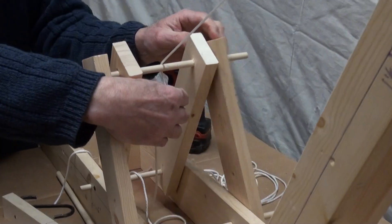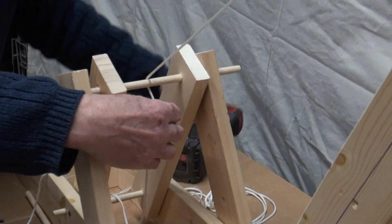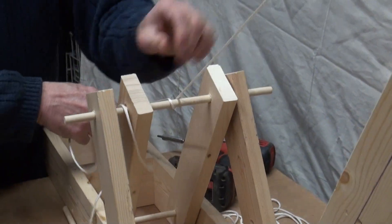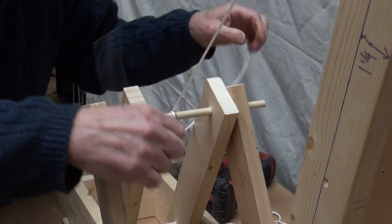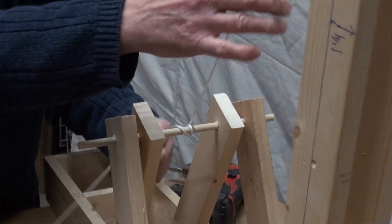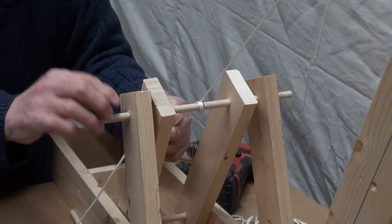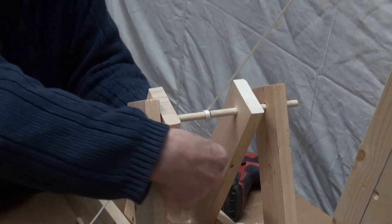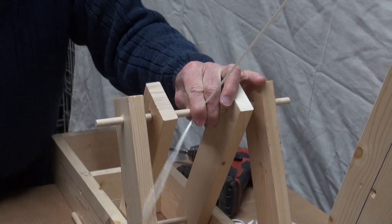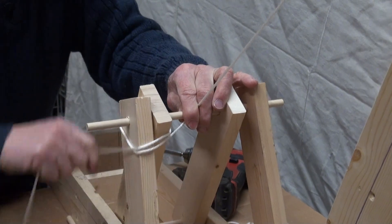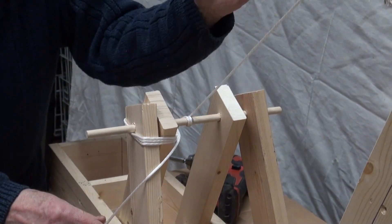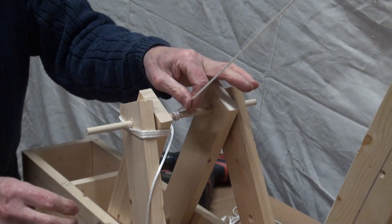The trick is, first you wrap it around a bunch of times around this dowel in the middle. Even though it's wrapped around three times, it still slips a lot. So you wrap it around the supports here. It's going to slip a little bit.